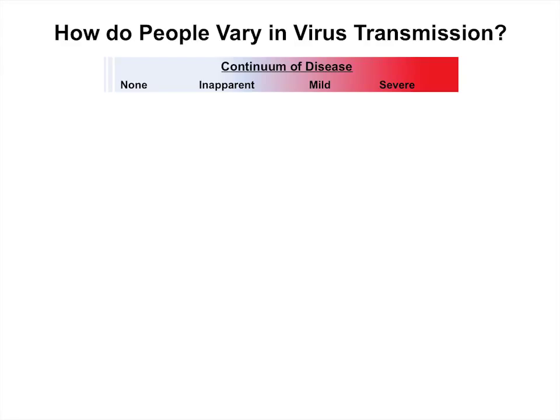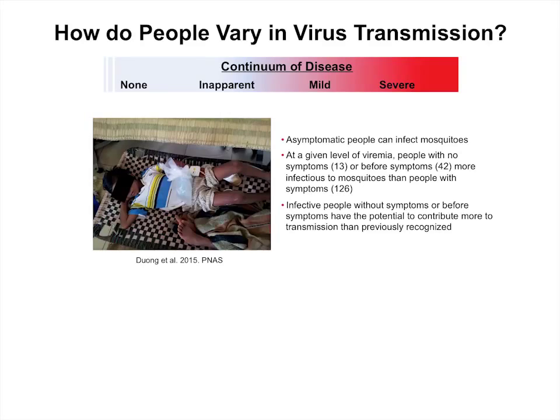We thought: might there be differences in how people contribute to transmission — not just in how they move, but in their disease severity? We wanted to look at what happens across the disease spectrum, from no symptoms to severe disease. We had colleagues at the Pasteur Institute in Paris working in Cambodia, so we decided to go there for this study. We identified people with mild disease and more severe disease, and fed mosquitoes on them to see how infectious they were — to what extent did they transmit virus to mosquitoes.